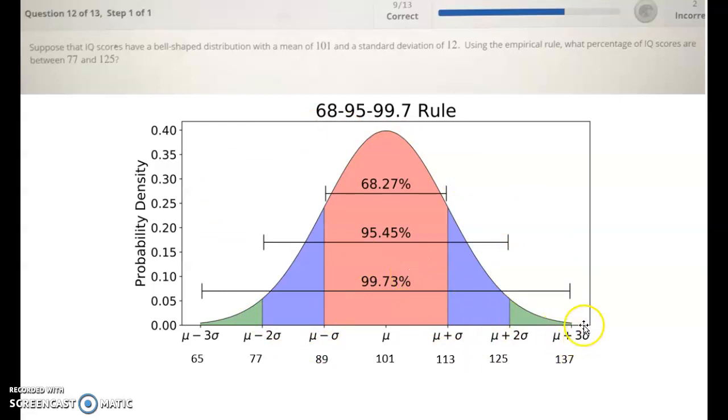And if we wanted to go between 65 and 137, we could get 99.73%, virtually all the data. And this is often why geniuses are considered more than three standard deviations above, just because they're so rare. And we also have a similar thing with intellectually disabled, would often be people who are that far out in the extreme of the tails.